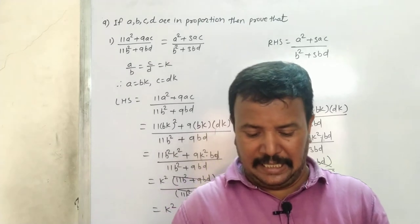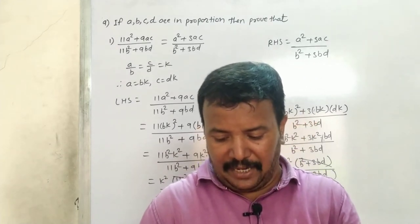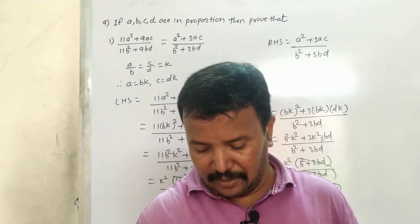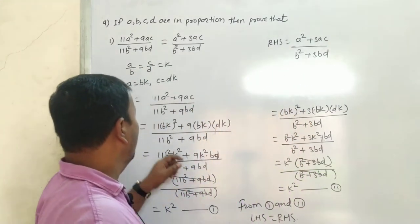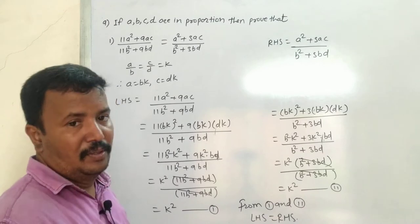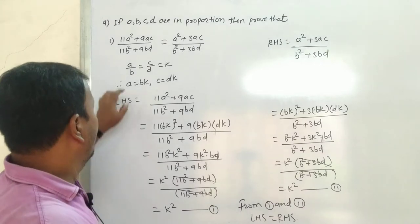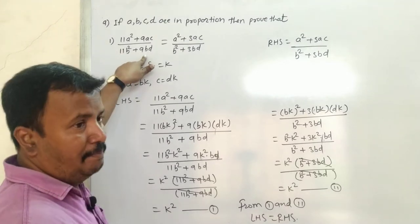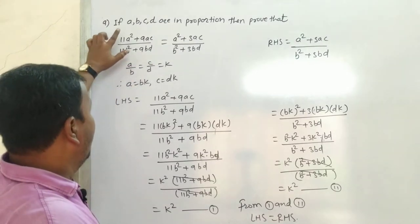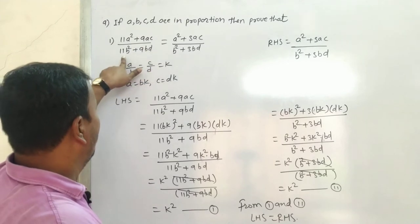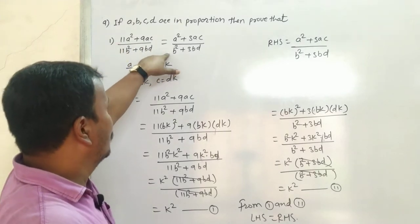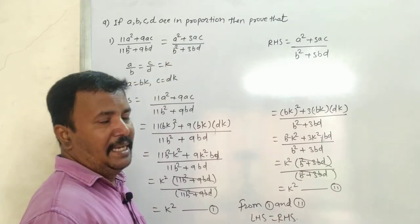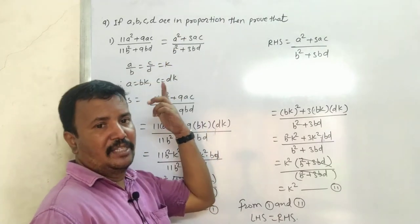Question number nine: if a, b, c, d are in proportion, then we have to prove that (11a² + 9ac) / (11b² + 9bd) is equal to (a² + 3ac) / (b² + 3bd). We have to prove that LHS and RHS are both the same.